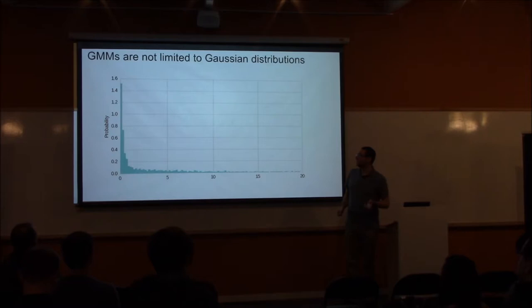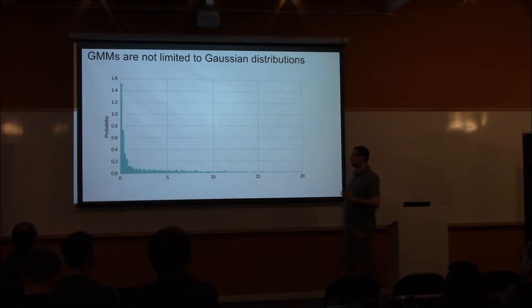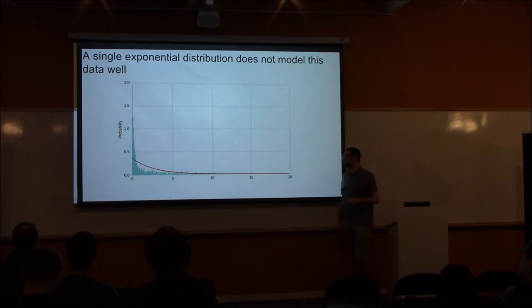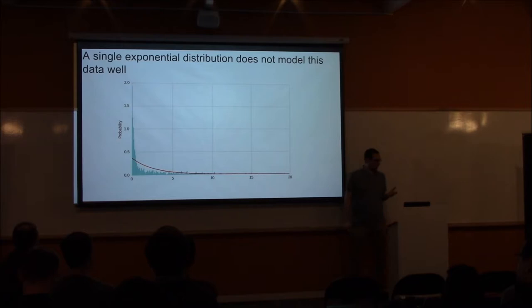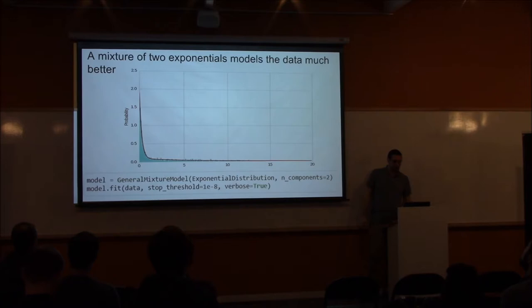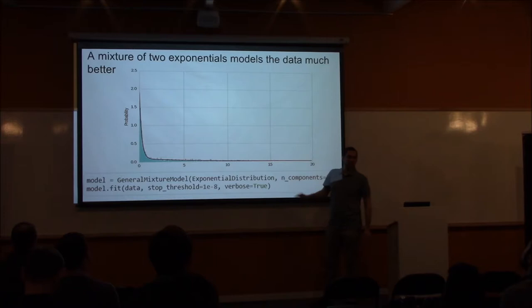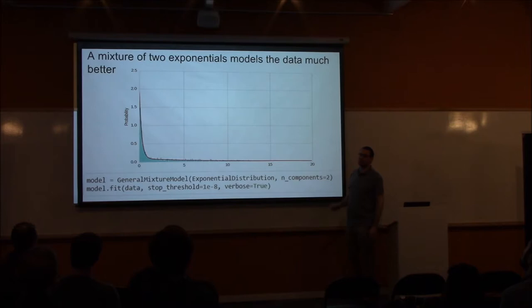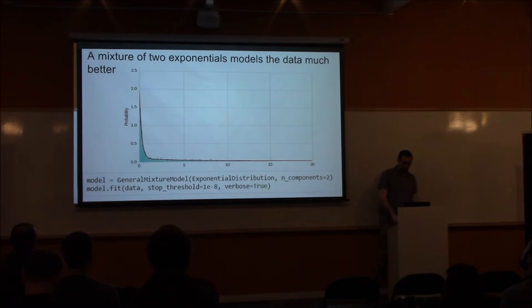There's no reason why you have to be limited to Gaussian components. You could use any type of distribution as long as it exposes a probability method and fit. Here we see data which might initially look like a single exponential distribution. However, if you try to fit a single exponential, we see it under-predicts at the very left-hand side and over-predicts in the middle. Instead of finding some even more complicated single distribution, let's define a mixture of two exponential distributions — one which decays very rapidly at the beginning, and one which decays very slowly. All you have to change in the code is to pass an exponential distribution instead of normal. The resulting PDF fits far better than the single exponential.